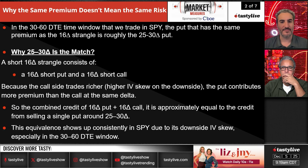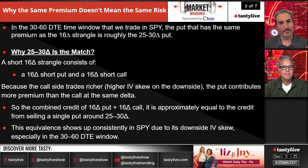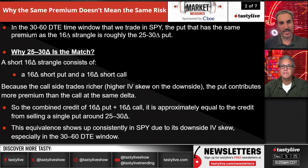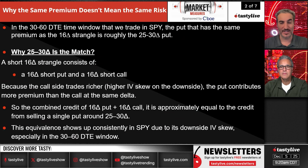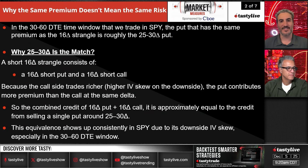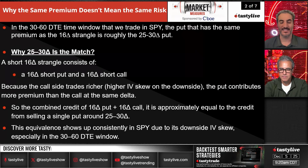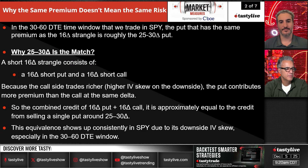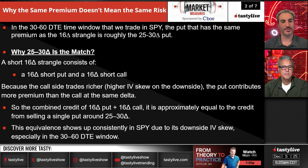In the 30 to 60 day time window, the put that has the same premium as the 16 delta strangle puts you at roughly the 25 to 30 delta put. So if you're just doing one side and selling the put, you're going to sell about the same amount of premium as selling the one standard deviation strangle in SPY. The combined credit of the 16 delta put and 16 delta call is approximately equal to selling a single put at a 25 to 30 delta.